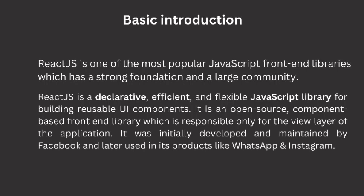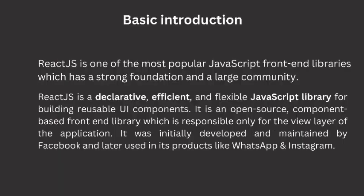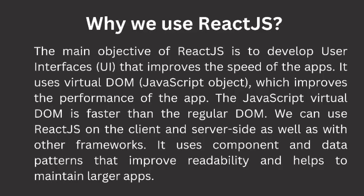Today most websites are built using MVC, which stands for Model-View-Controller architecture. In MVC, React is the V, which stands for View, where the rest of the architecture is provided by Redux or Flux. The main objective of React JS is to develop user interfaces.